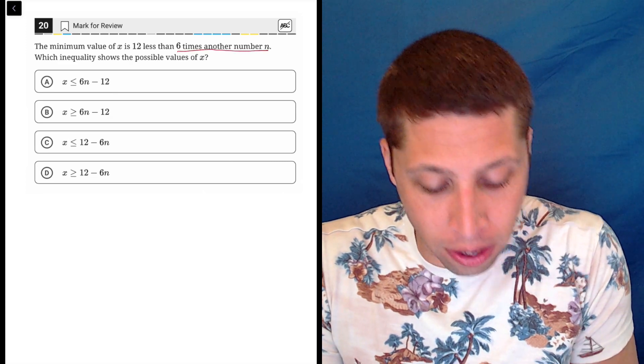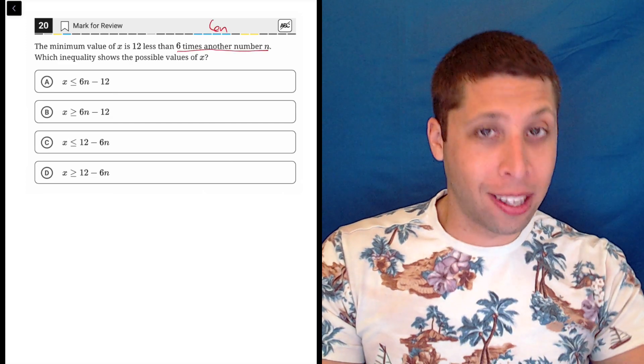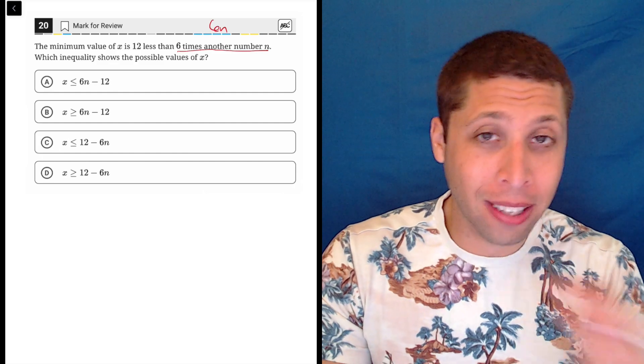6 times another number n, so that's going to be 6n. Now they all contain 6n, so that doesn't really help us, but that's kind of how I'd start.